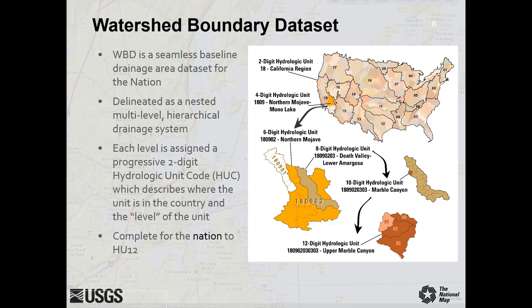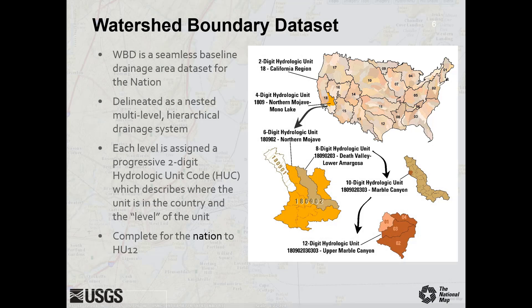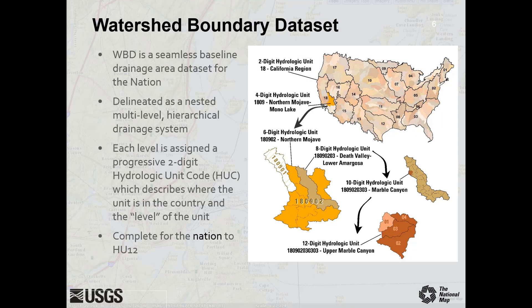WBD serves as a seamless collection of nested hydrologic units for the nation. This illustration helps demonstrate its multi-level hierarchical structure. The largest hydrologic units are identified by a two-digit code, called the hydrologic unit code, or HUC. These large units are divided into a collection of smaller hydrologic units. These smaller divisions gain an additional two digits on their HUC code, and each subsequent level of subdivision adds a progressive two-digit code.